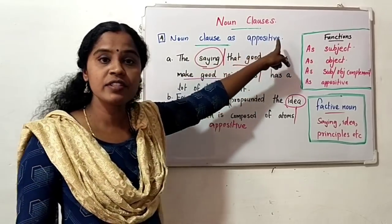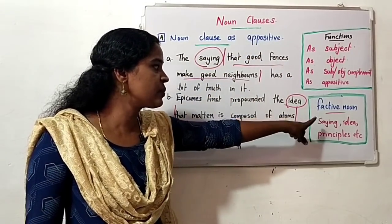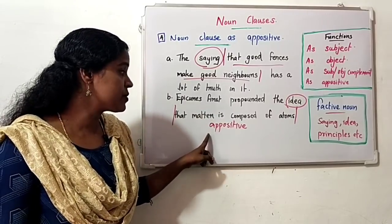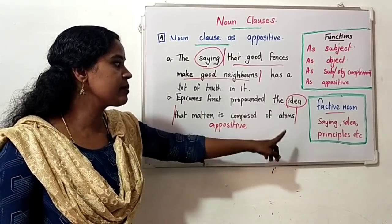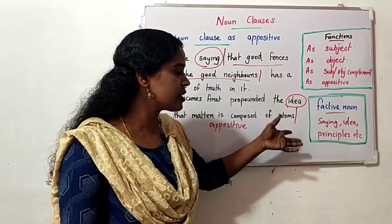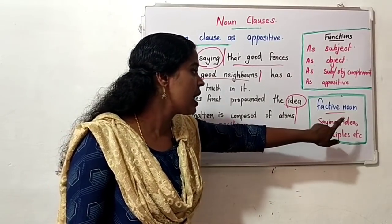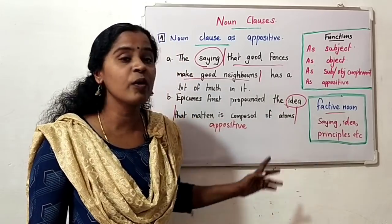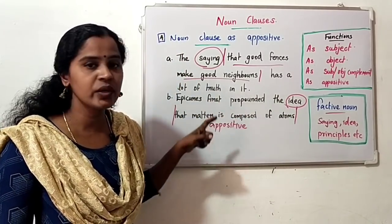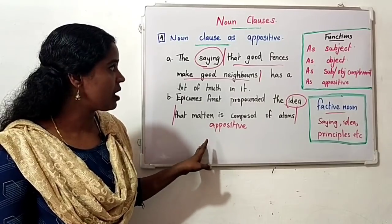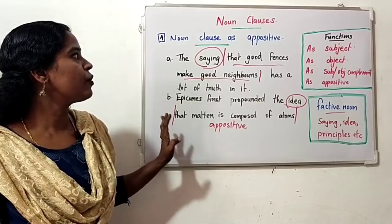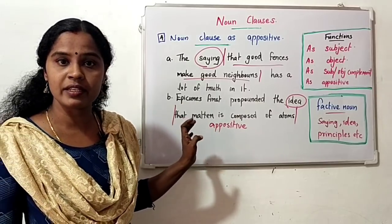Usually for appositive noun clauses, the head words are factive nouns. Factive nouns are words like 'saying,' 'idea,' and 'principles.' So these are the four types of noun clauses we can see.